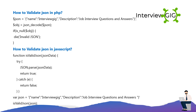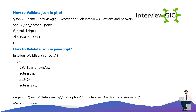How to validate JSON in PHP: $json = '{"name":"InterviewGig","description":"Job Interview Questions and Answer"}'; $obj = json_decode($json); if (is_null($obj)) { // invalid JSON } else { // valid JSON }.